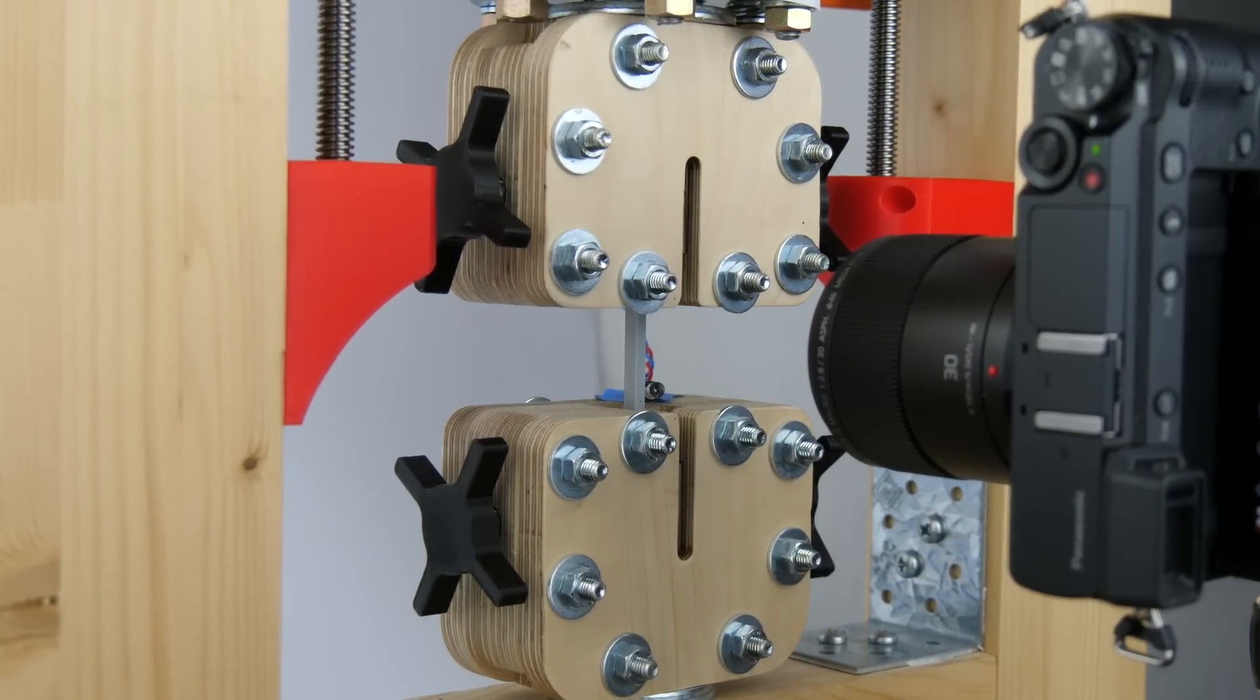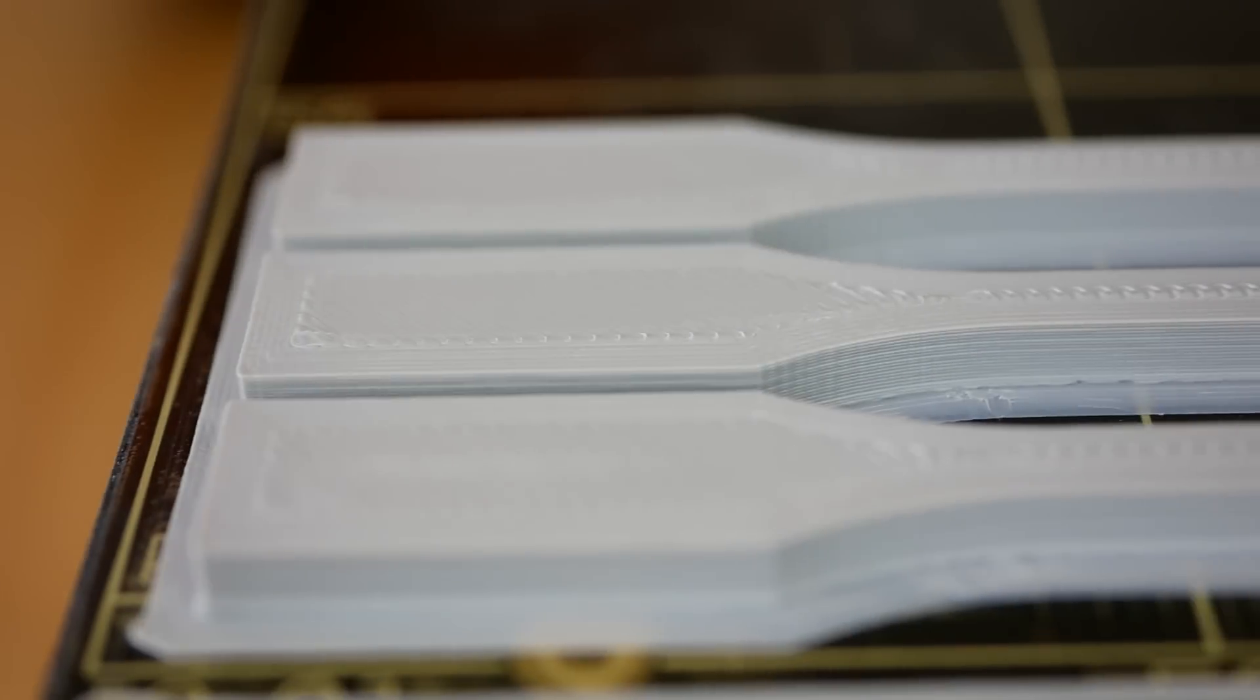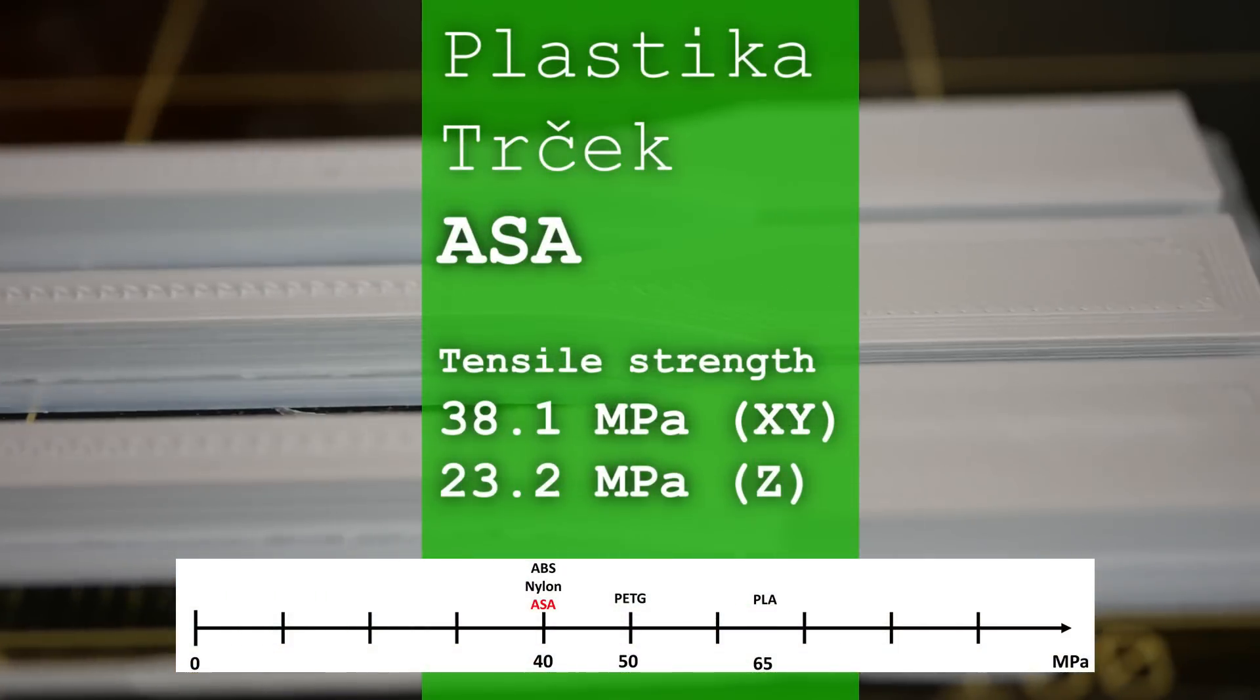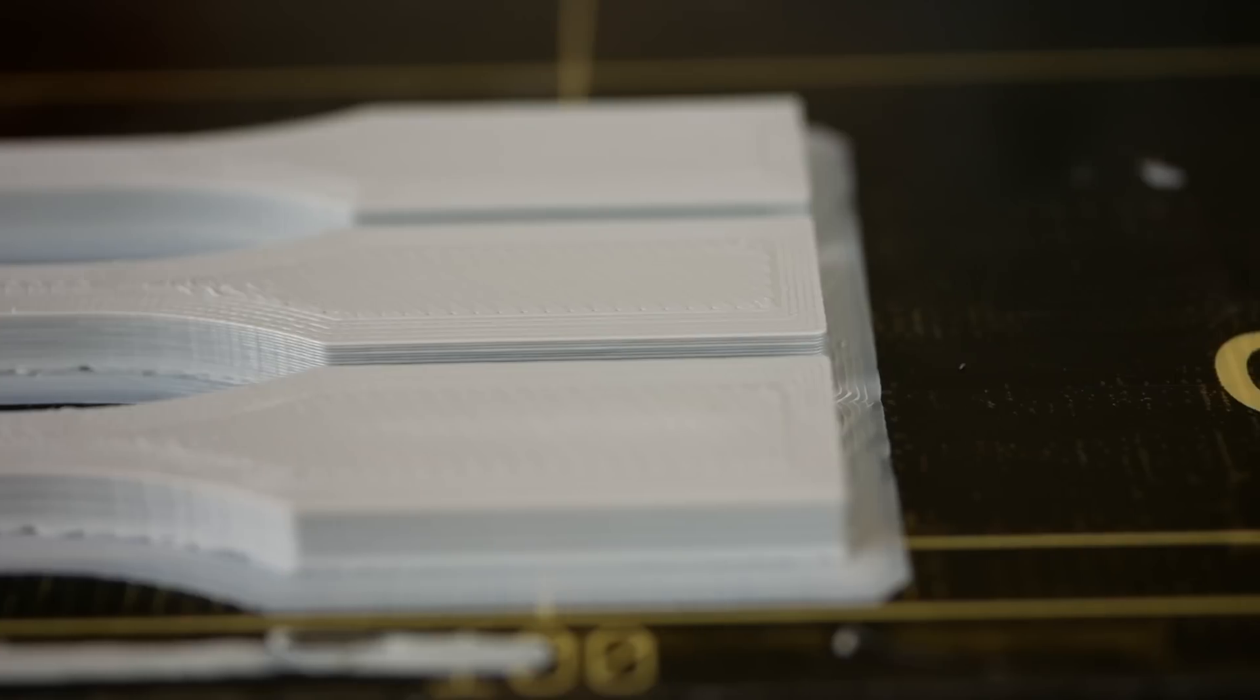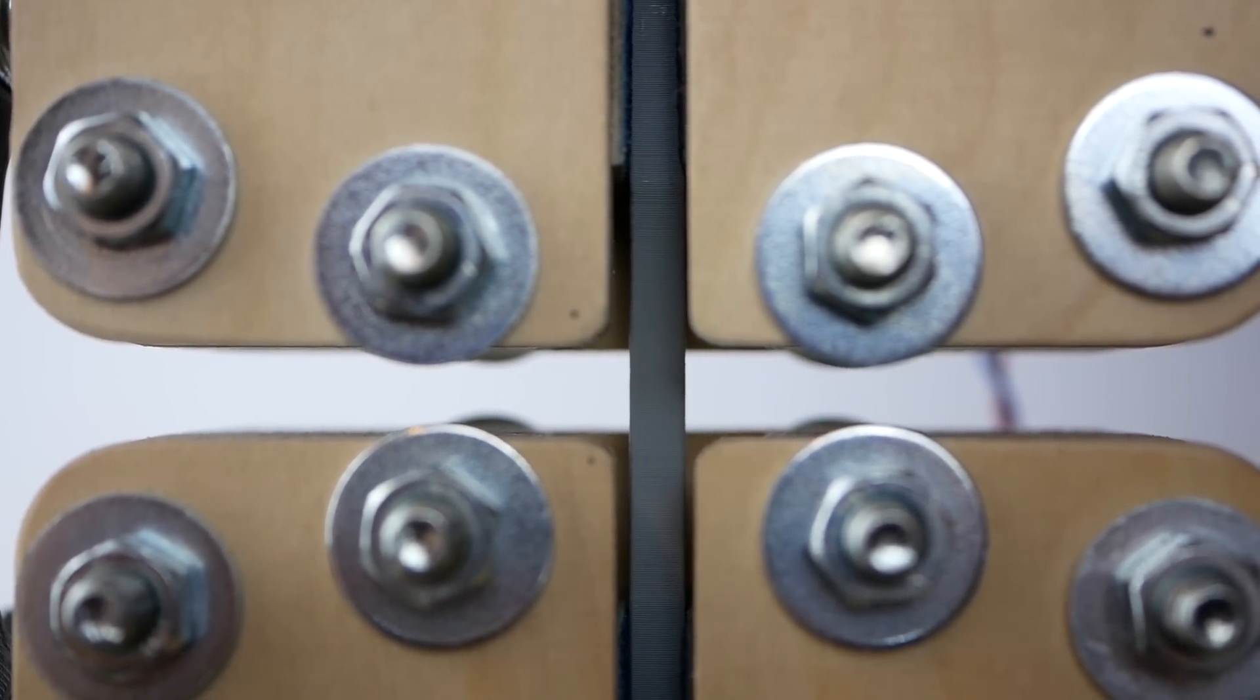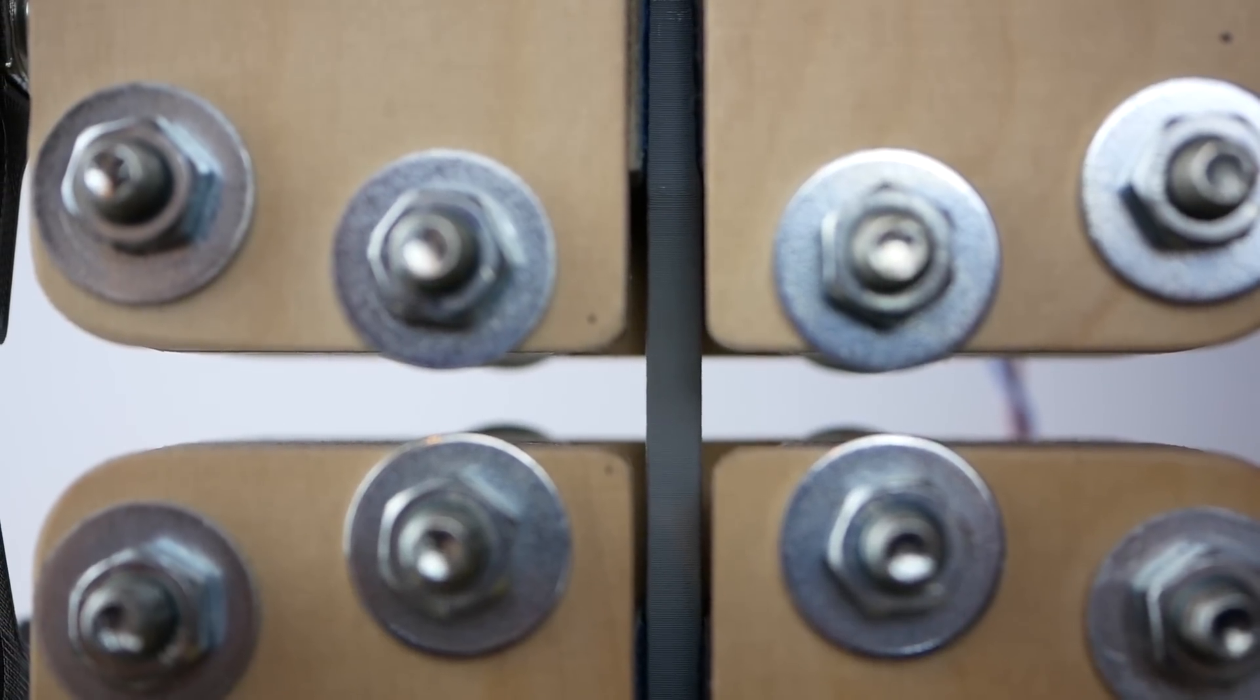Now to the material tests. The lying specimens showed an average tensile strength of 38 MPa which is quite comparable to ABS. Layer adhesion was not the greatest and the upright specimens were only able to withstand 60% of the load before they failed.